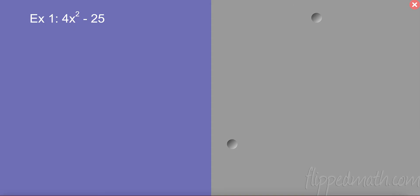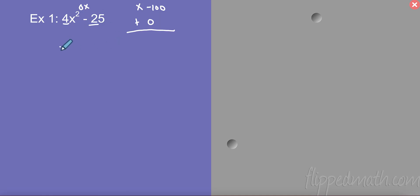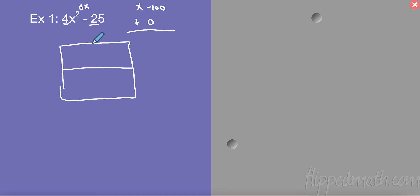Alright, first one, here we go. The first thing I want us to look at — I need two numbers. First thing I notice is that there's no middle term, so that's like 0x. I need two numbers that multiply to first times last, so I need two numbers that multiply to negative 100 and add to 0. I'm going to first put my first term 4x² in the first box and my last term in the last box.